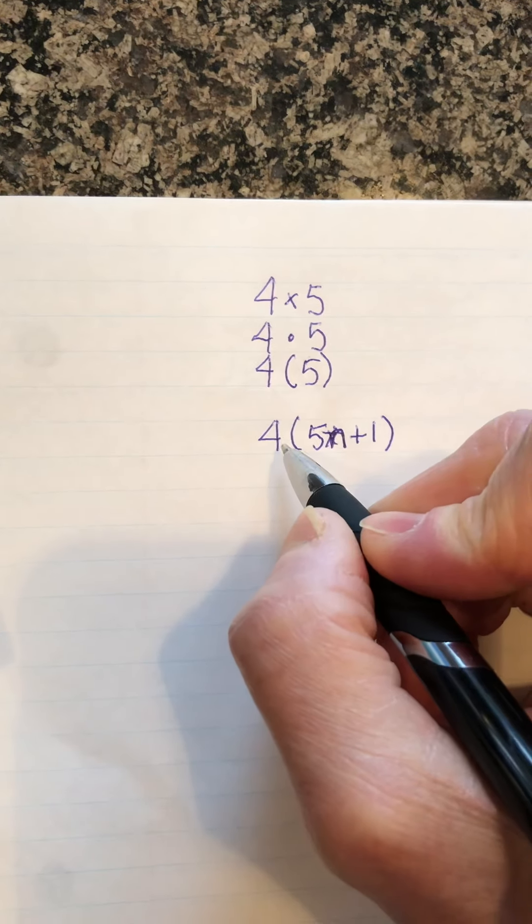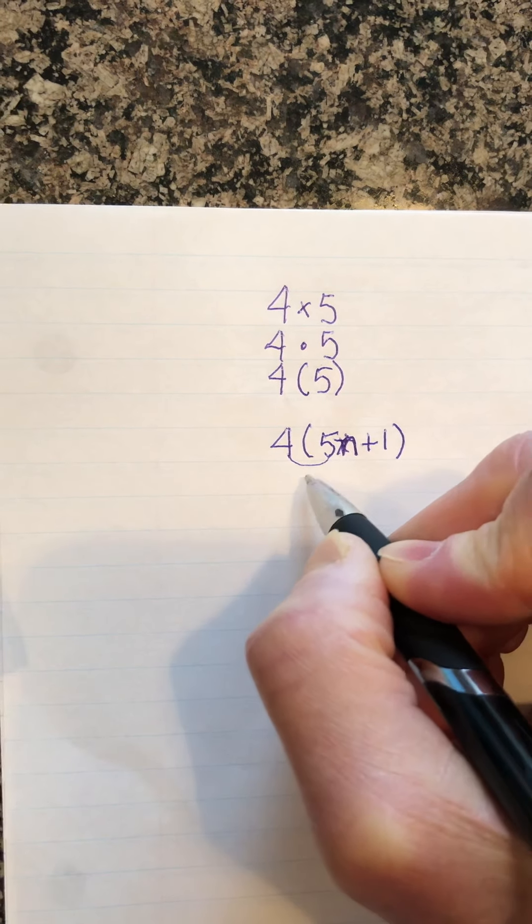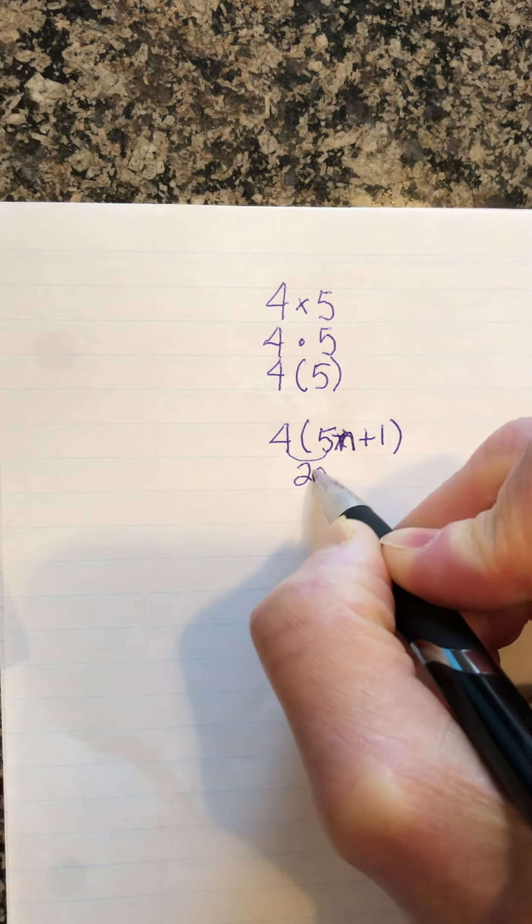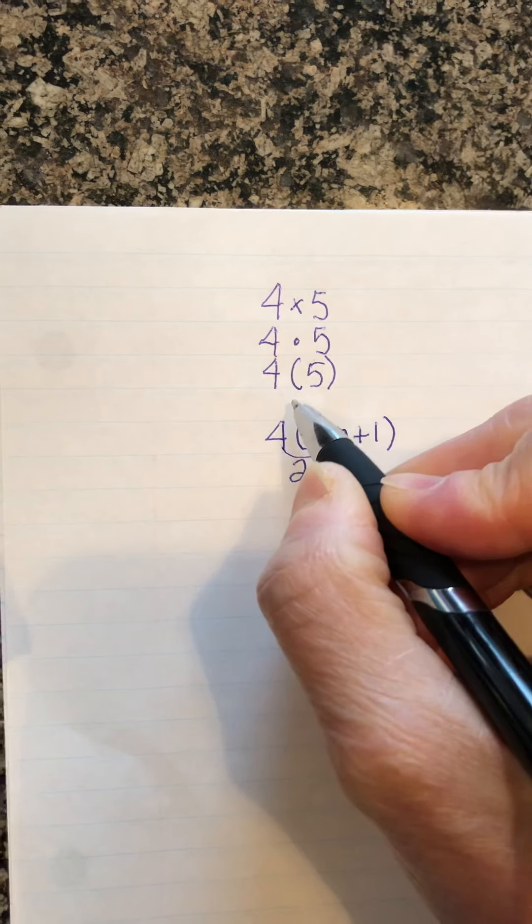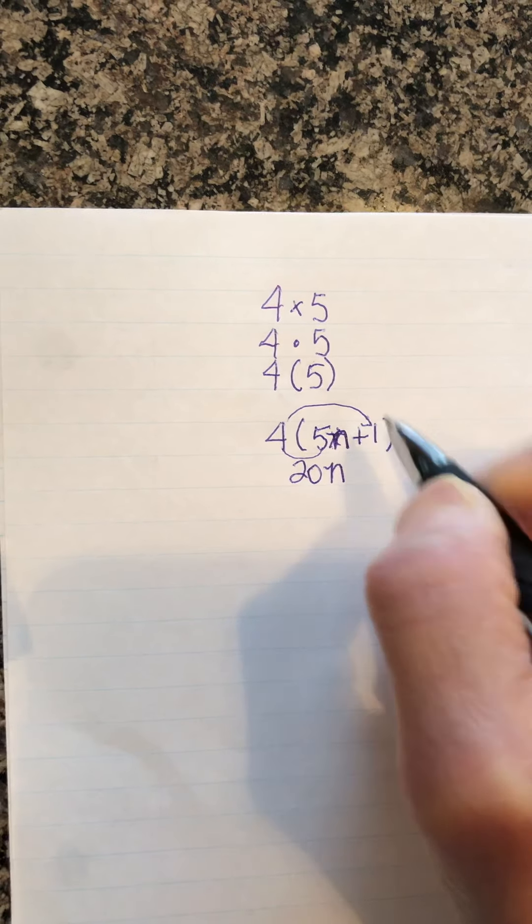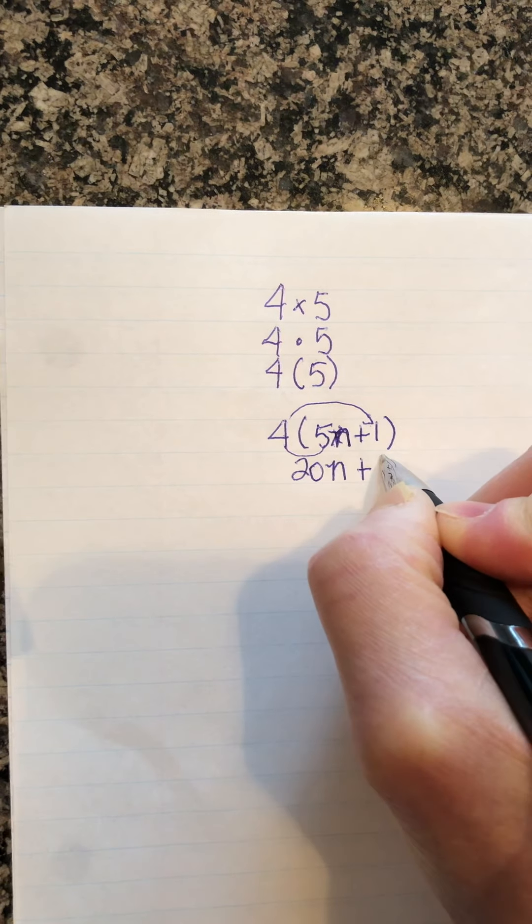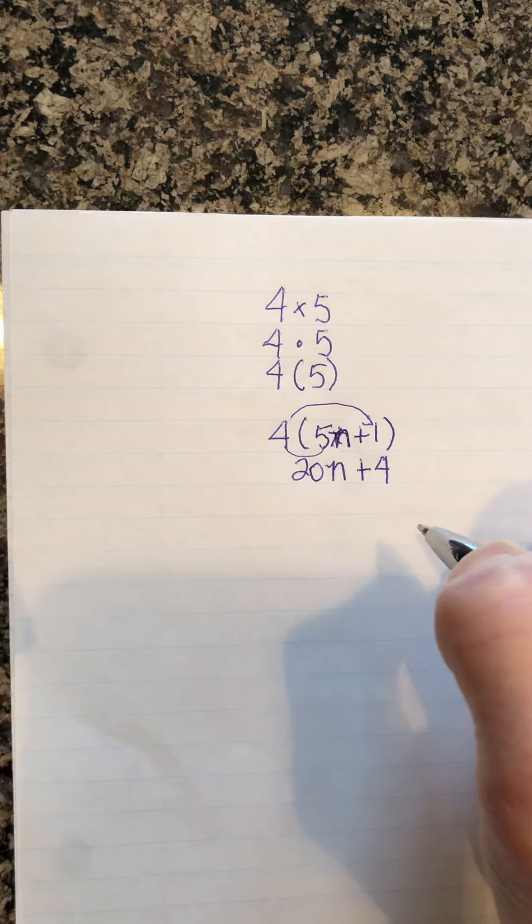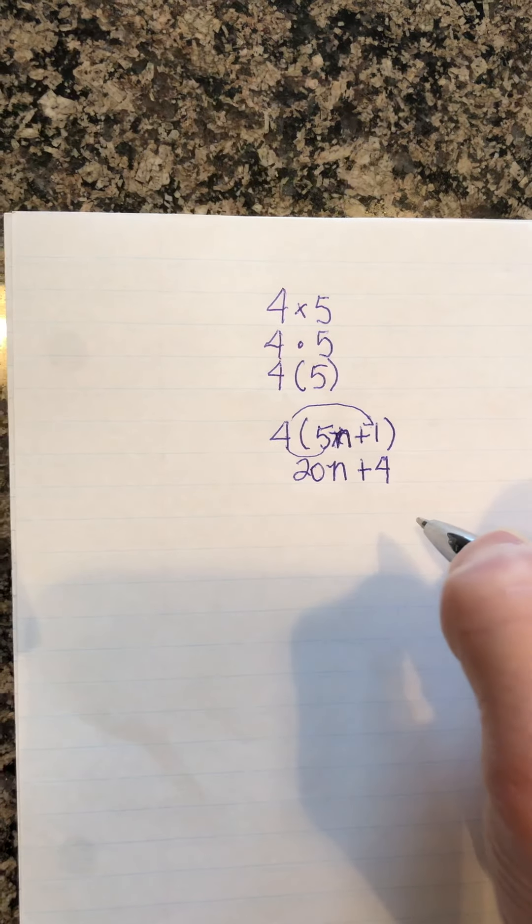So what we would have to do is multiply the 4 by the 5. That's going to give us 20, but we can't forget the n, so that's 20n. And then we're going to multiply the 4 by the 1. That's 4 times 1 is 4. So our expression is 20n plus 4.